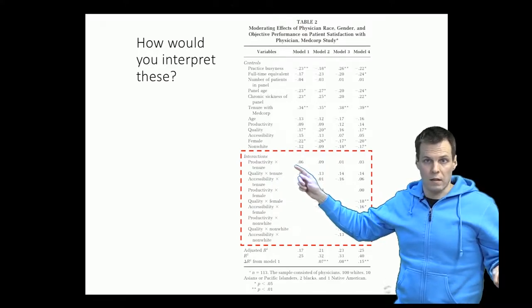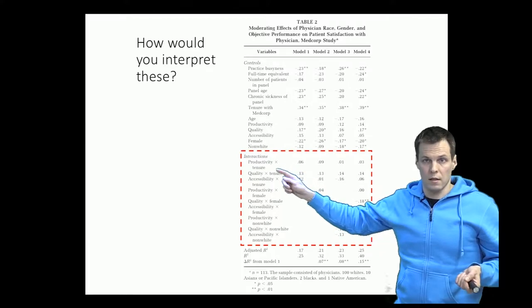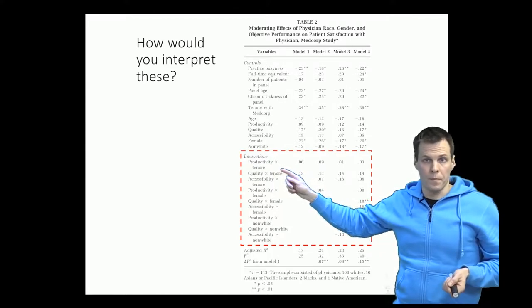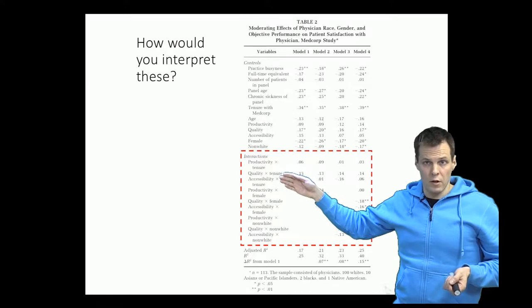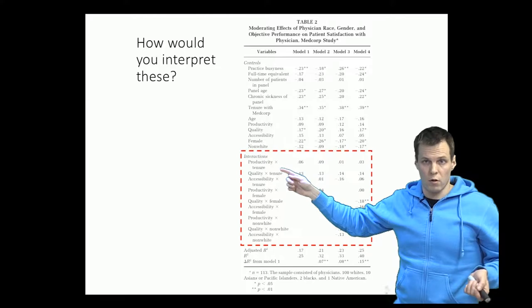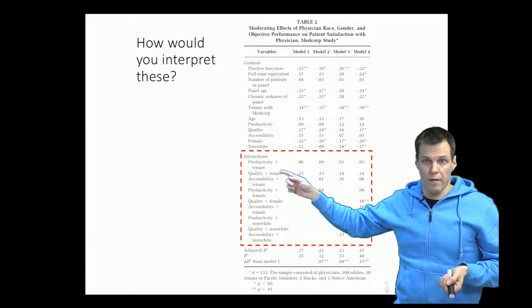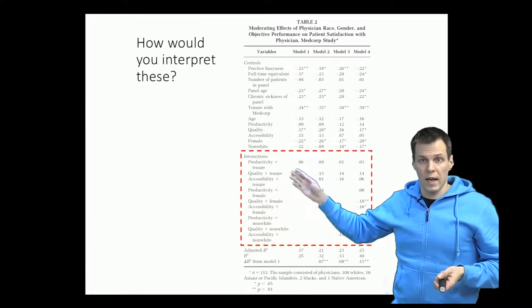You can't do that because you can't change this interaction and at the same time hold tenure and productivity constant. So this varies only when tenure or productivity or both vary and so we can't interpret that directly.